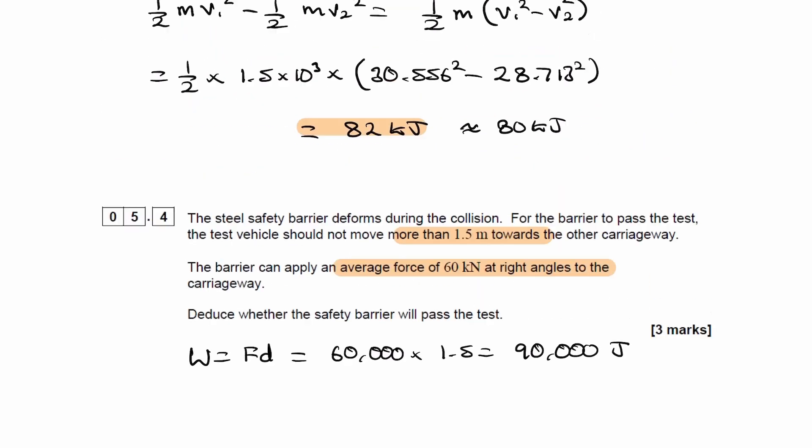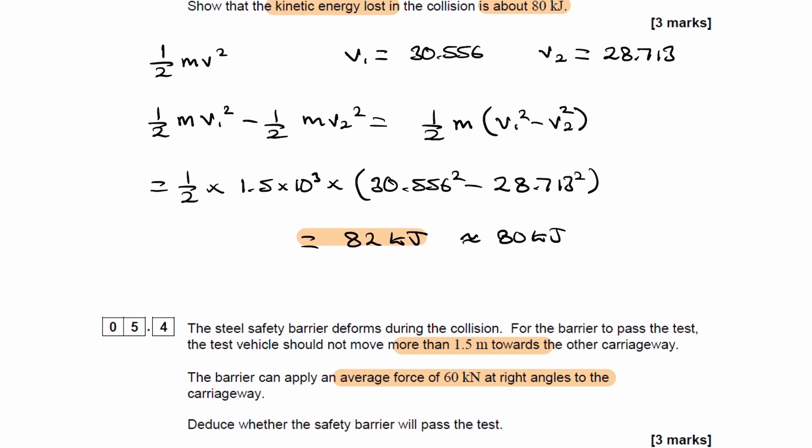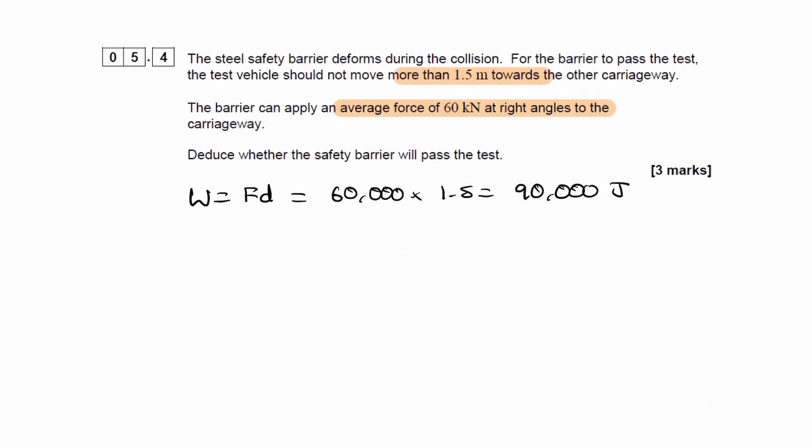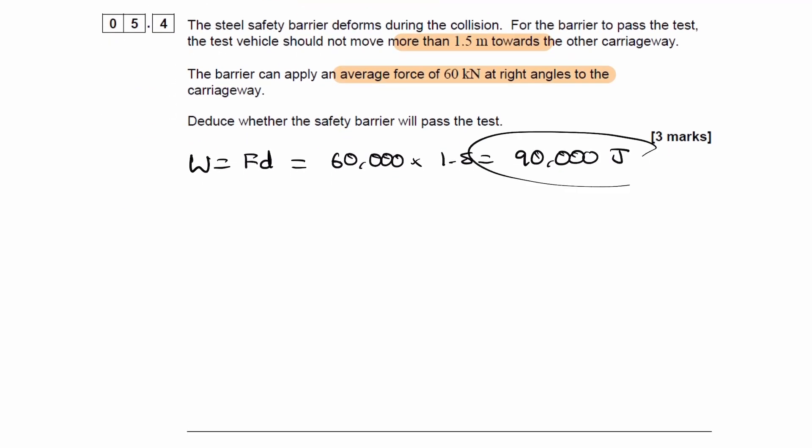In our scenario, the energy that we have to dissipate is 82 kilojoules. So therefore, the barrier does pass. The safety test is passed because the maximum amount of energy that can be dissipated is greater than the energy required to be dissipated in this scenario.